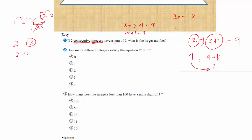Dividing by two, X equals four. But we don't write four as the answer because the question asks for the larger number. The first number is X which is four, and the second number is X plus one which is five. So the answer is five.